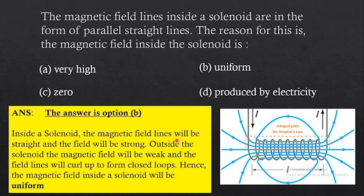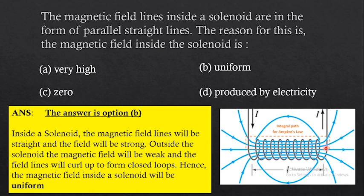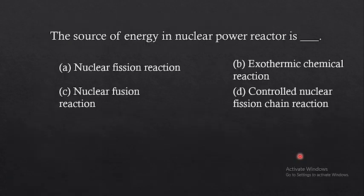Inside a solenoid, the magnetic field lines are straight and the field is strong. Outside the solenoid, the magnetic field is weak and the field lines curl up to form closed loops. Therefore, the magnetic field inside a solenoid is uniform, and that is the reason why magnetic field lines inside a solenoid are parallel to one another.